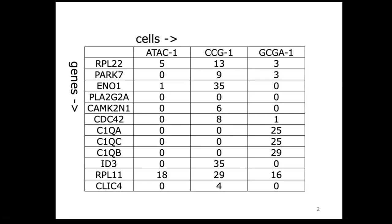You can already see that there are quite specific expression patterns, so we probably have different cell types. For example, the C1QA and C1QC genes are relatively highly expressed in the third cell, while they have no expression measured in the first two cells. Similarly, a gene like E1 has high expression in the middle cell and very low expression in the other two. But first, before we work with these expression profiles, we need to do quality control, scaling, and normalization.